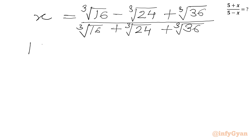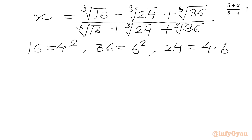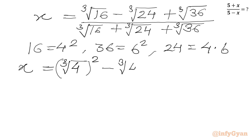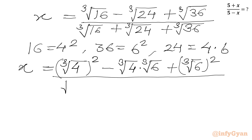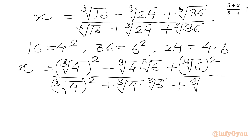Now we can write 16 as 4 squared, 36 as 6 squared, and 24 can be factored as 4 times 6. So x becomes (cube root of 4 squared minus cube root of 4 times cube root of 6 plus cube root of 6 squared) over (cube root of 4 squared plus cube root of 4 times cube root of 6 plus cube root of 6 squared).